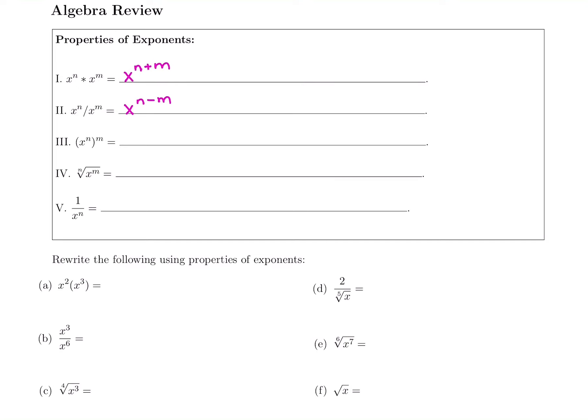Next, we have a power raised to a power: x to the n, raised to the m power. When you have a power raised to a power, you actually multiply them — n times m.